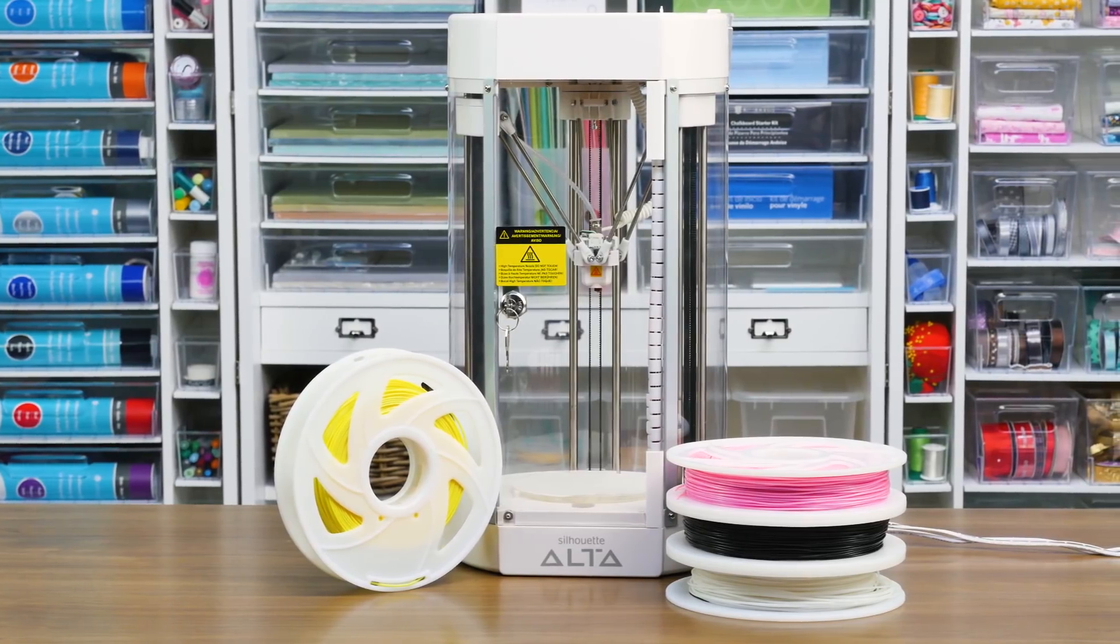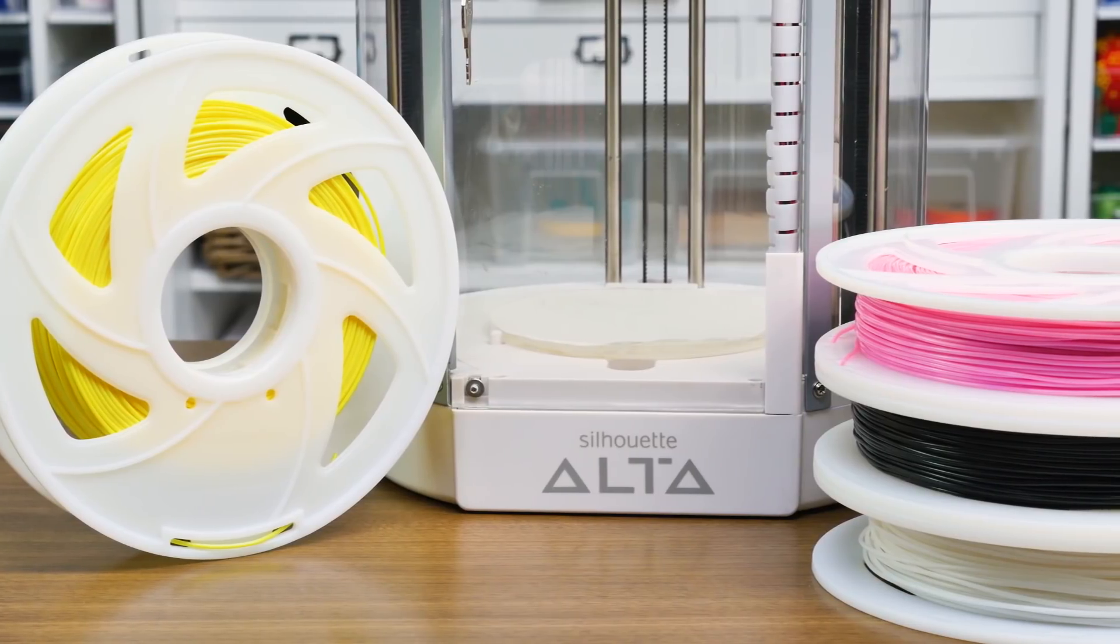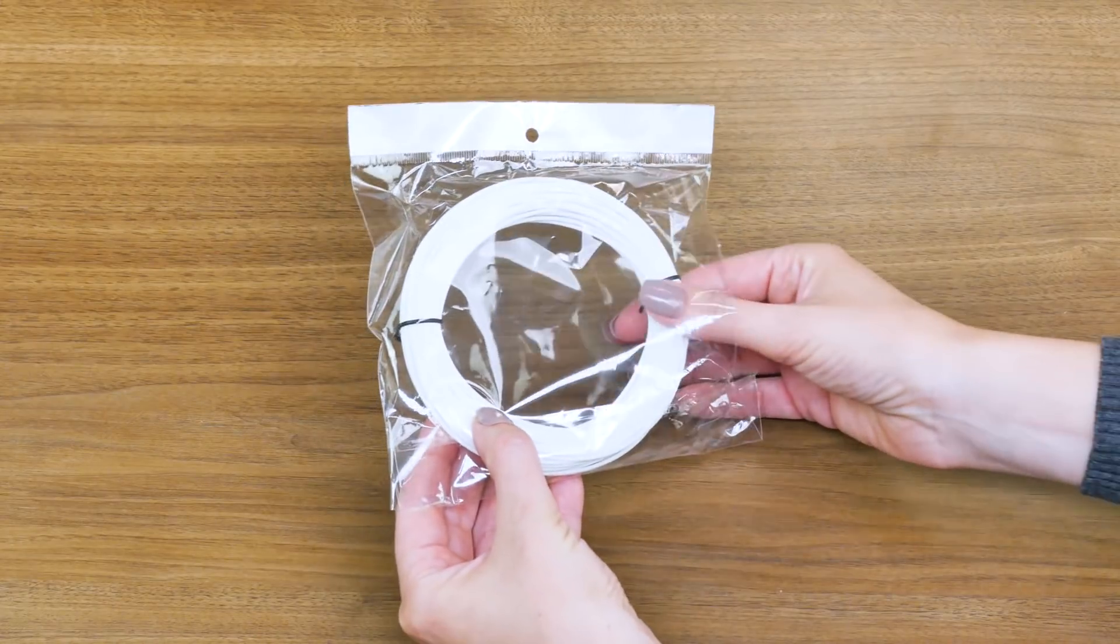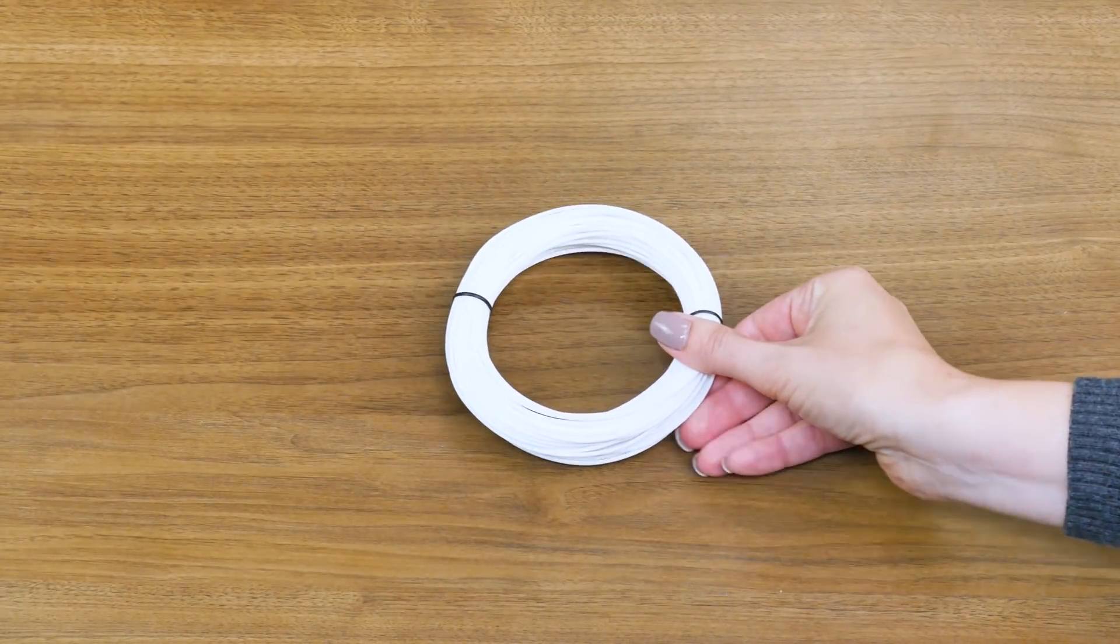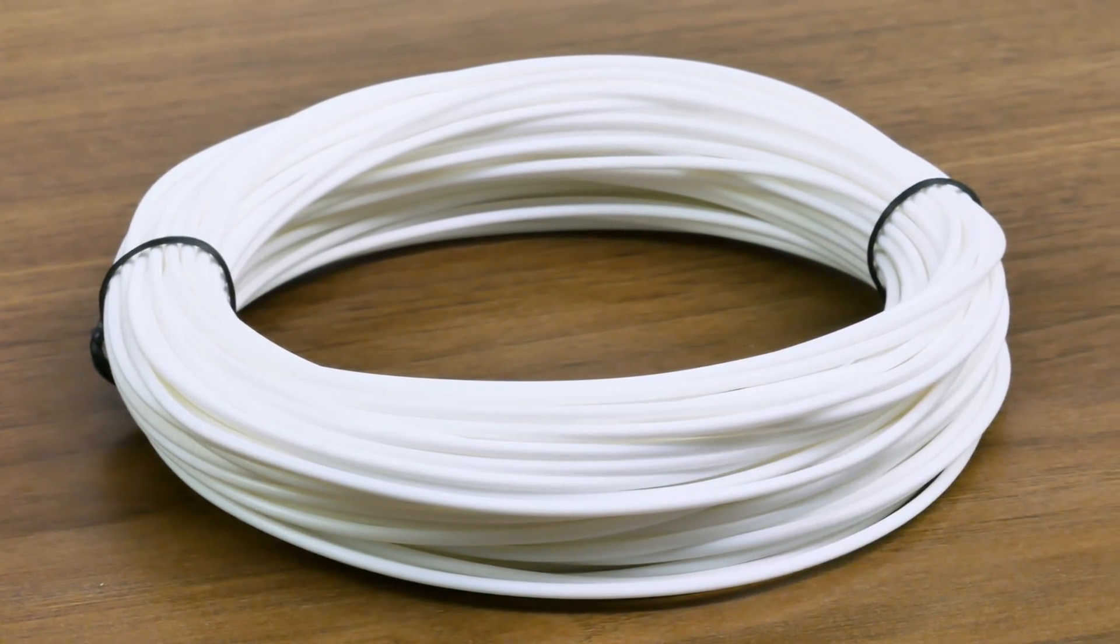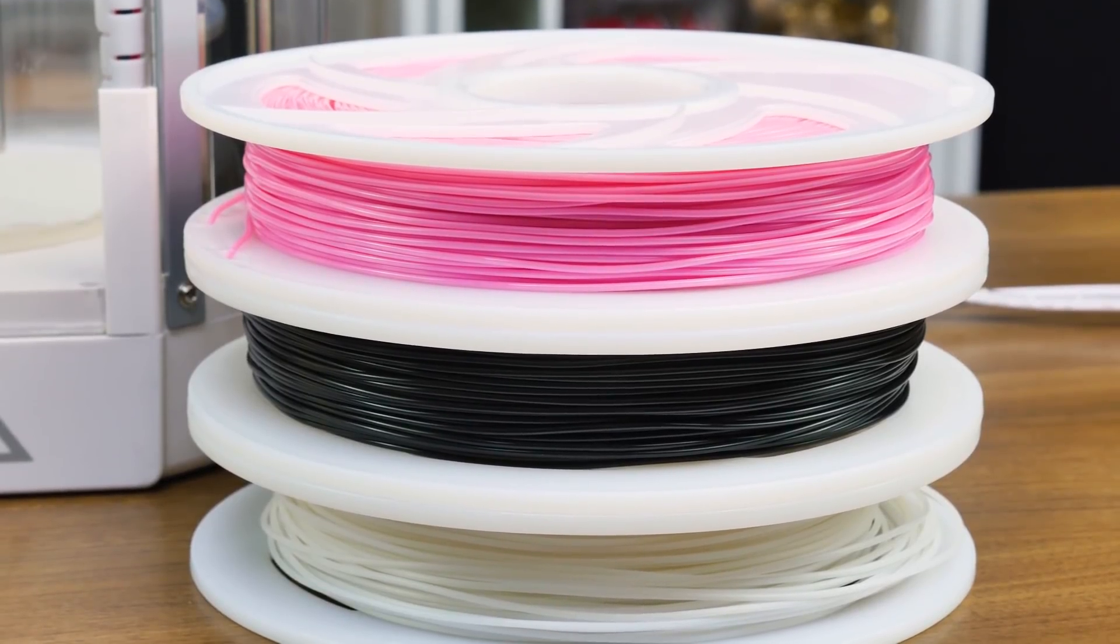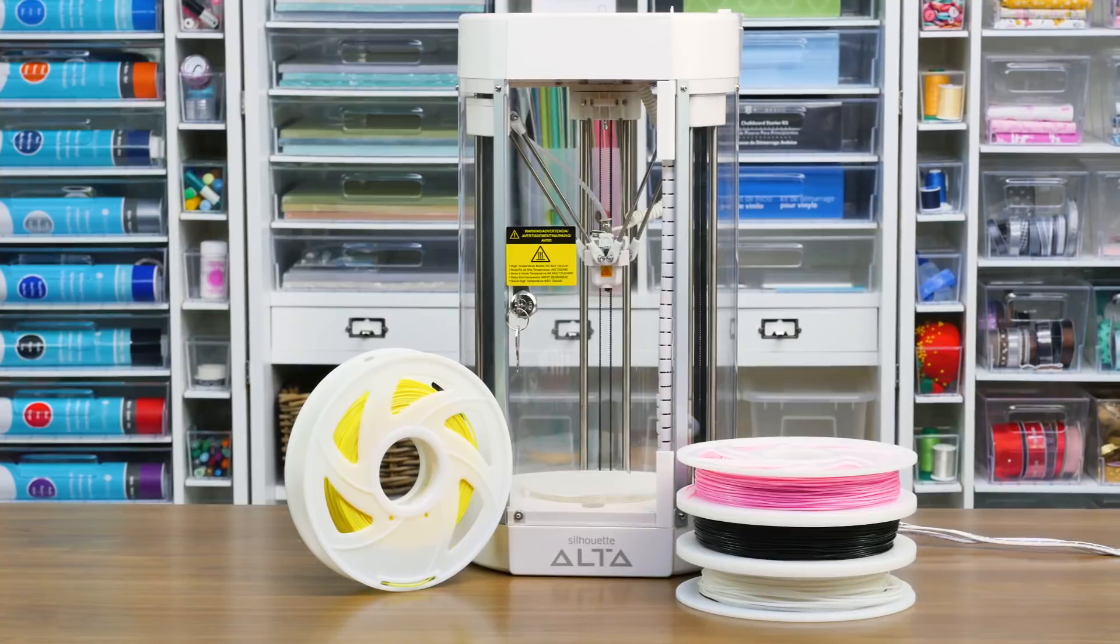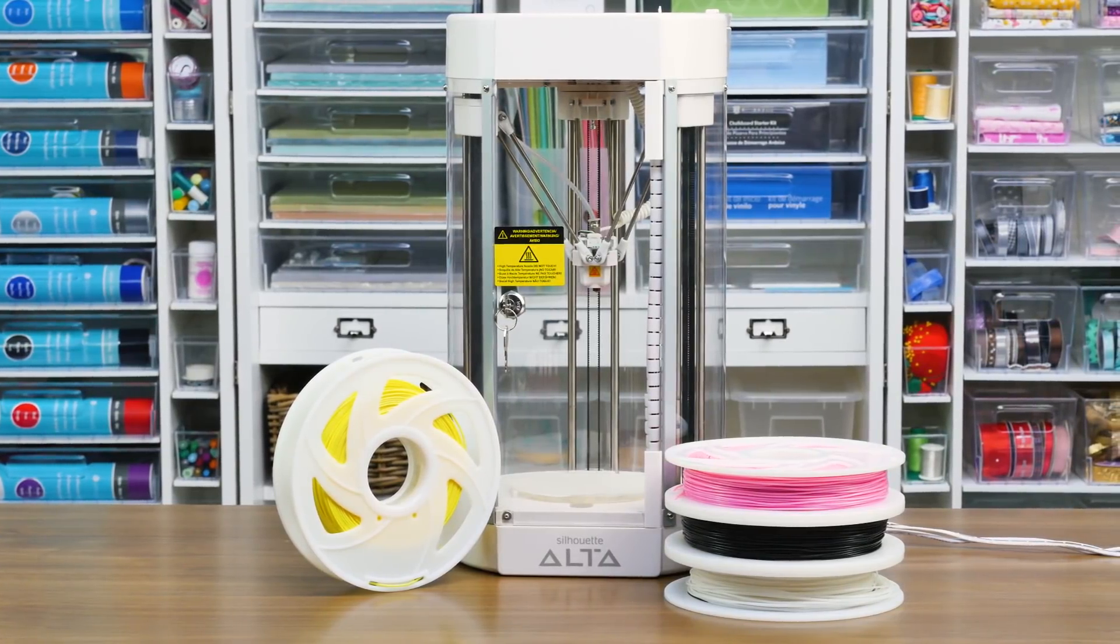Filament loading. The Alta can print any PLA or polylactic acid filament that is 1.75mm thick. Included with your machine is a loose roll of white filament that is approximately 60g in weight. Should you wish to purchase more filament, Silhouette sells spools with 500g of filament in a variety of colors.